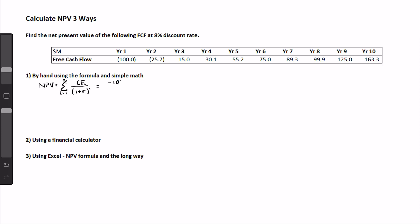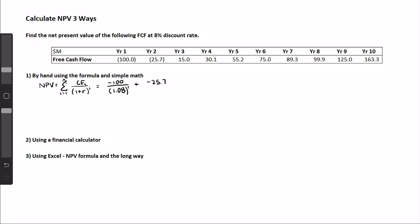So for the first year, it will be minus 100 because it was a cash outflow, divided by 1 plus the discount rate of 8%, which is 1.08, to the power of 1 since this is occurring in year 1. Then in year 2, it will be minus 25.7 million divided by 1.08 to the power of 2, plus the third year: 15 divided by 1.08 to the power of 3, and so on.